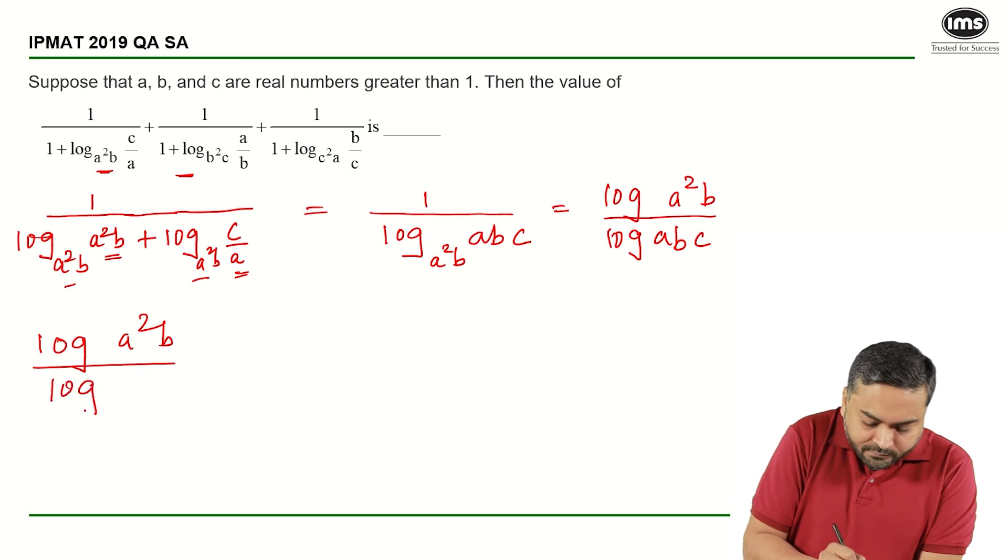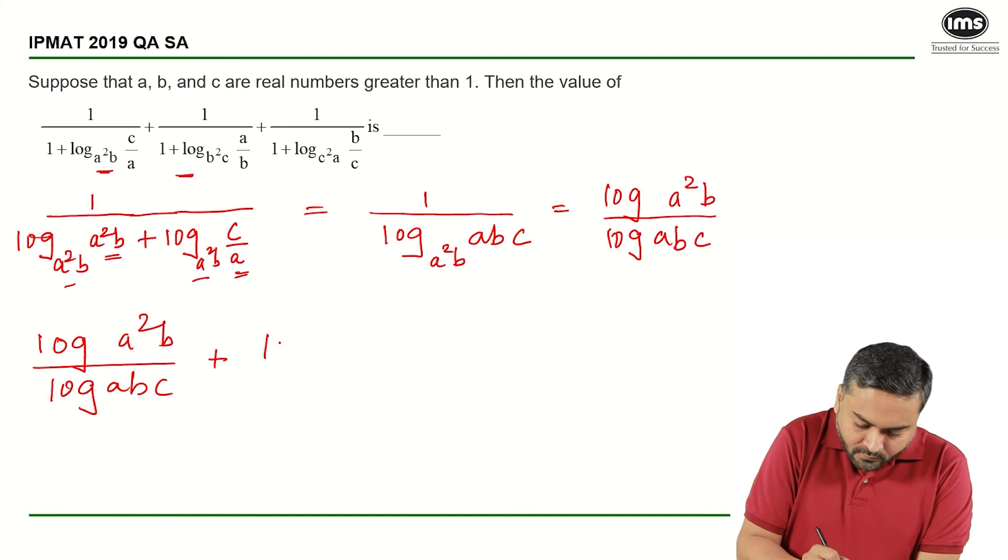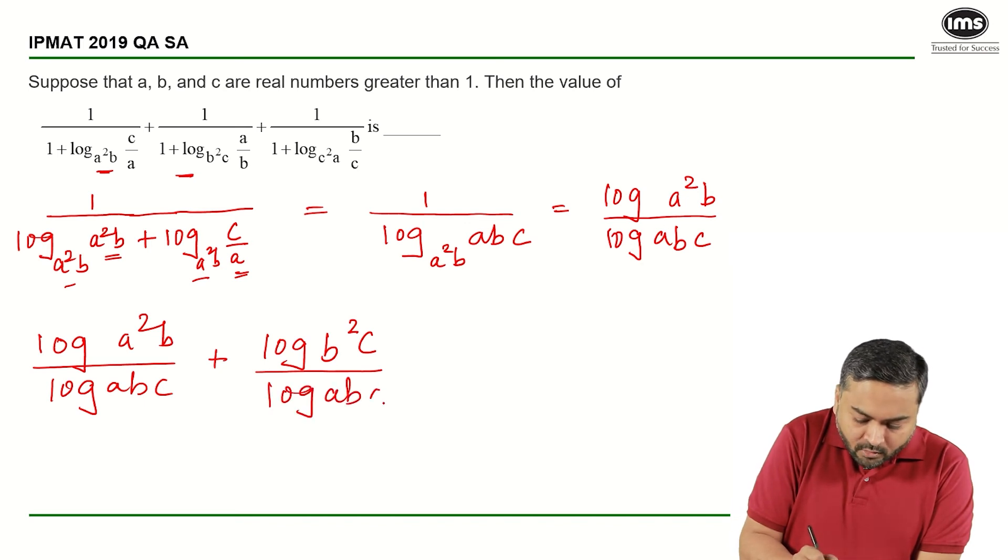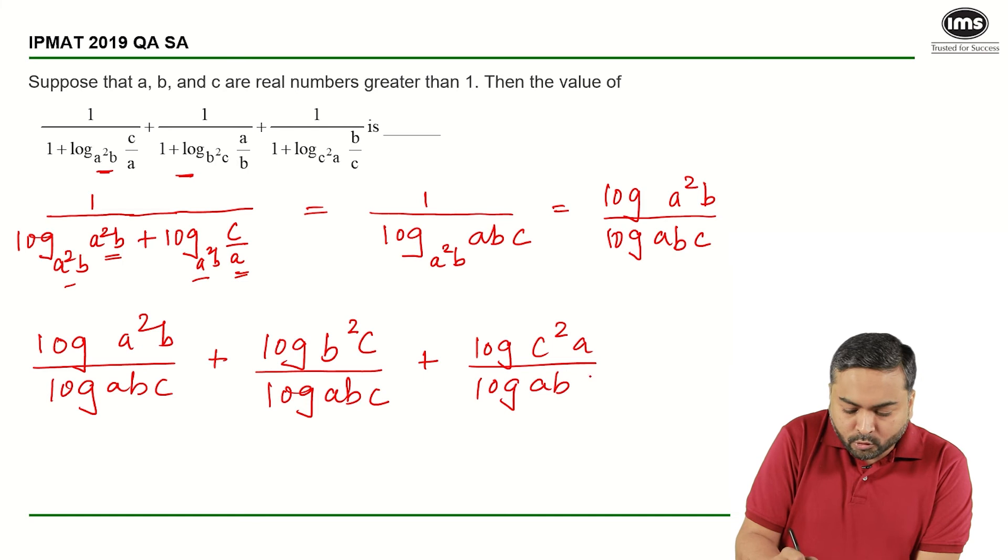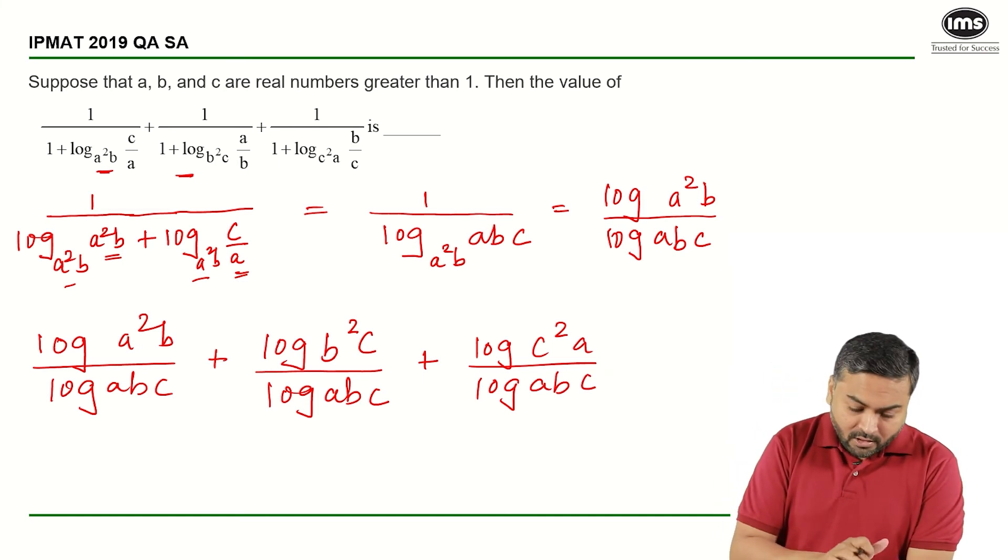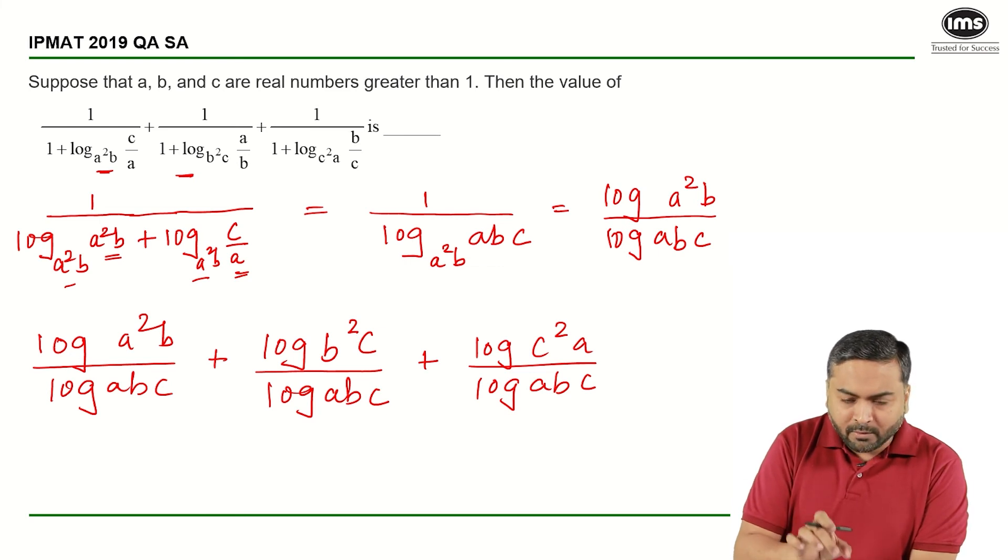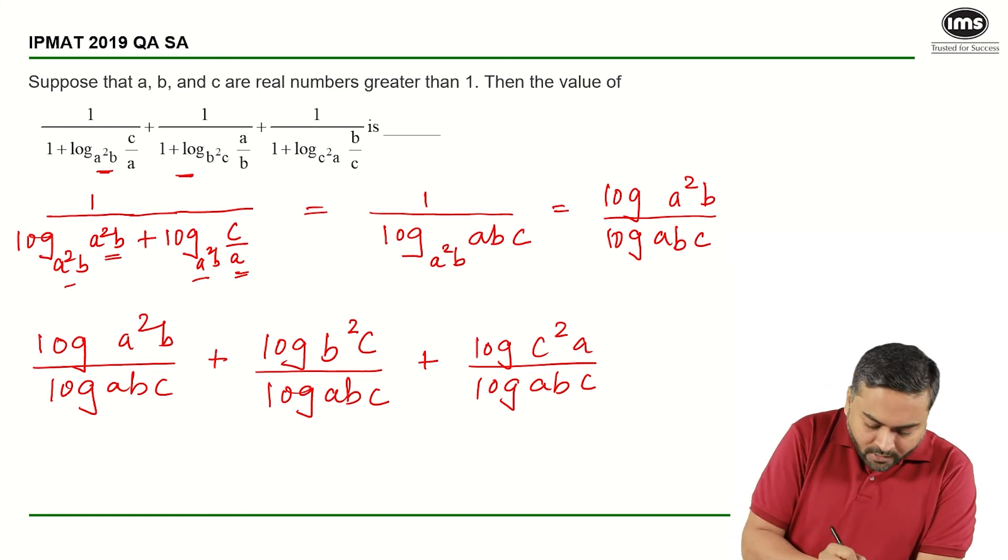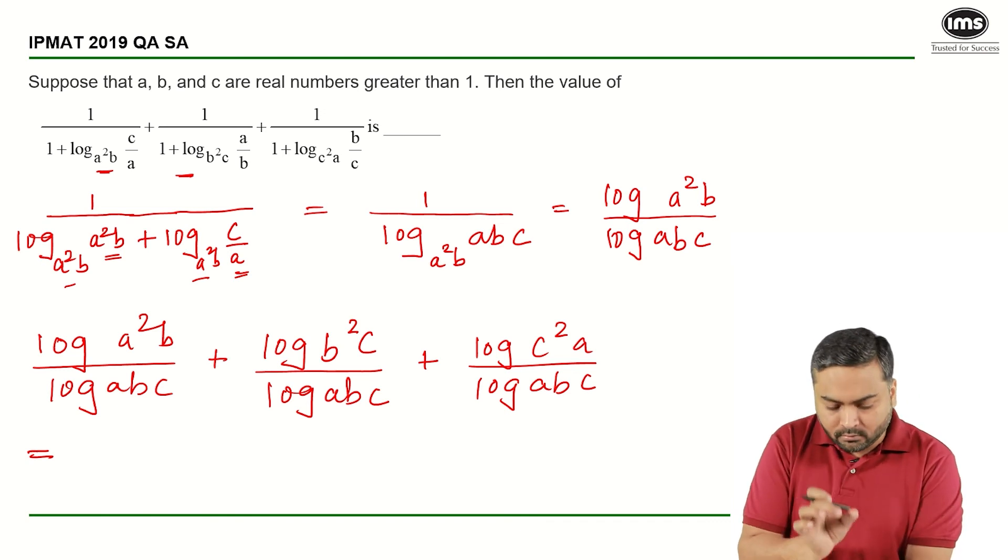The second term will be log of c square a upon log of abc. So now I have denominator common, right? The numerator will be log of something plus log of something plus log of something. That will give me all those terms inside the log will get multiplied.